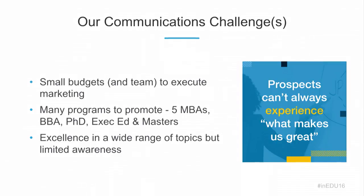Emory University's Goizueta Business School is located in Atlanta. We are the smallest of the top-20 business schools — about 180 full-time students, 60 in a one-year program, 90 in an evening program. It's a very small, intimate environment perfect for students who want accountability and a back-and-forth with faculty, able to fail but supported. Our communication strategy challenge: we have small budgets and a very small team of five to execute across what is essentially 10 programs — five flavors of an MBA, a BBA undergraduate program, PhD program, executive education, and master's programs.